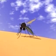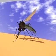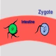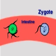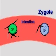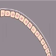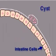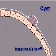A female mosquito sucks in plasmodia when she takes blood from a person infected with malaria. In her intestine, male and female forms of plasmodia combine into zygotes. Zygotes burrow into cells in her intestine and form tiny cysts.